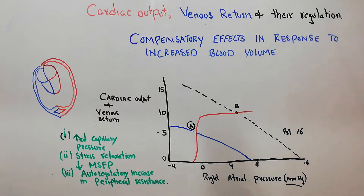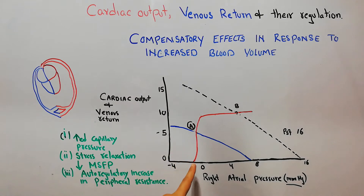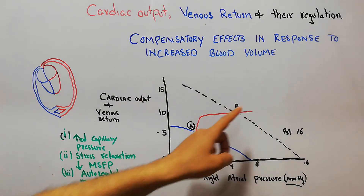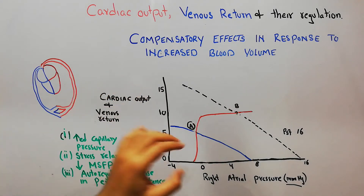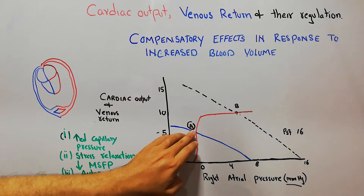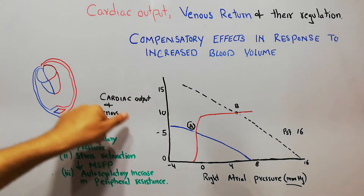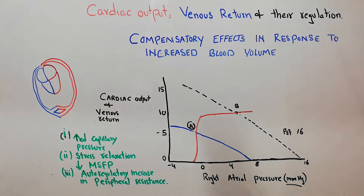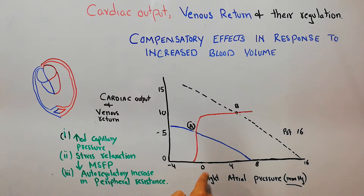To understand this topic we must remember that in our last lecture we discussed that when we plot the cardiac output curve and the venous return curve, both curves meet each other at an equilibrium point labeled as point A. The cardiac output and venous return are on the y-axis and the right atrial pressure is on the x-axis. The point at which the two curves meet is point A, where the right atrial pressure is 0.